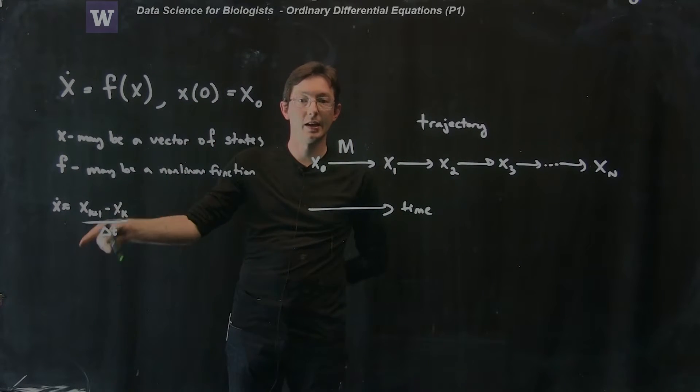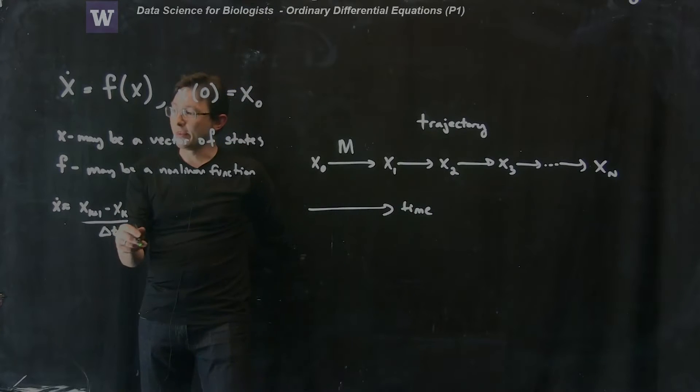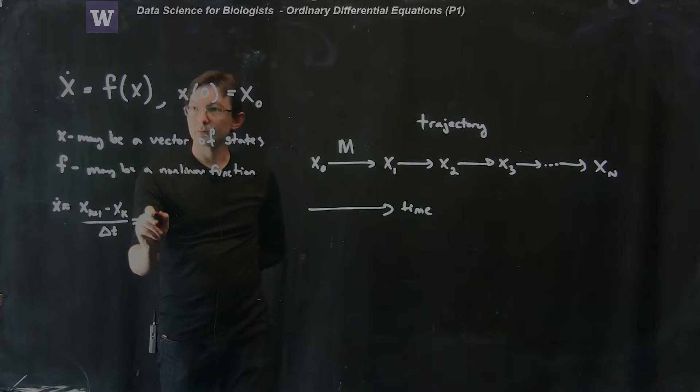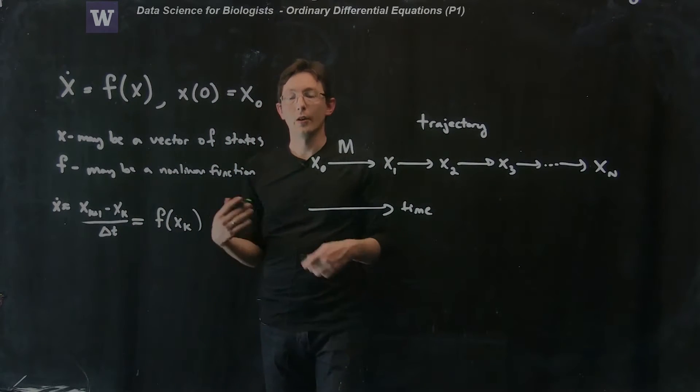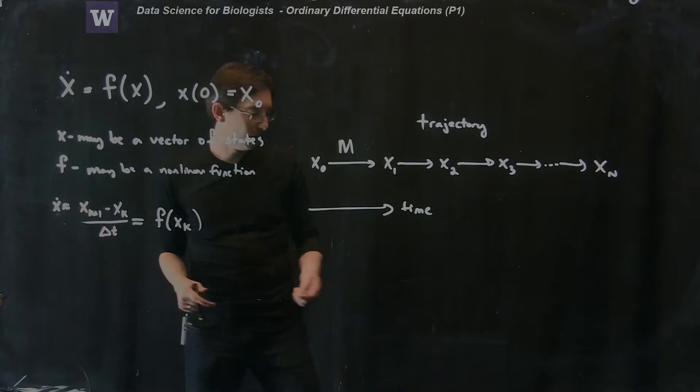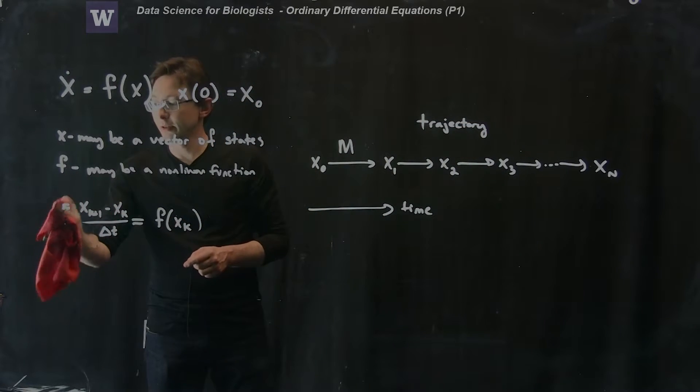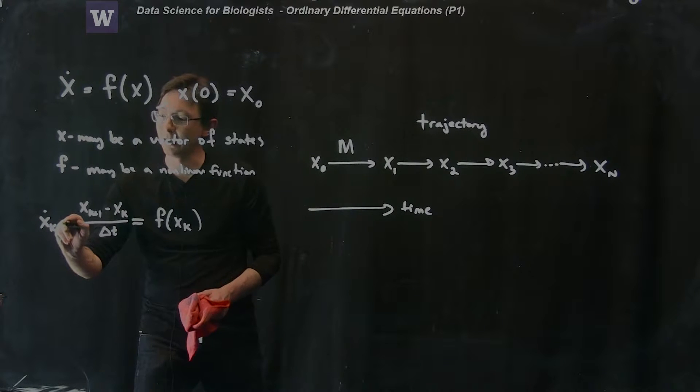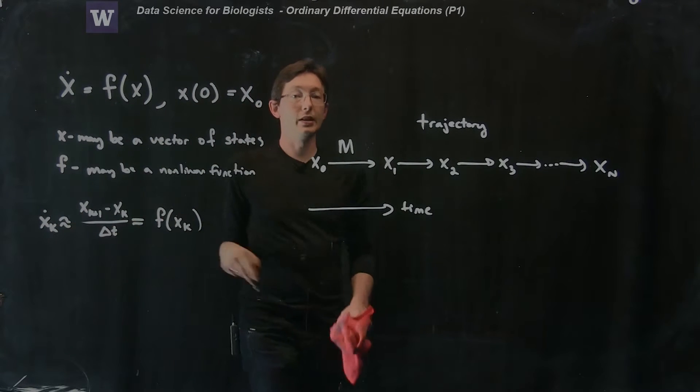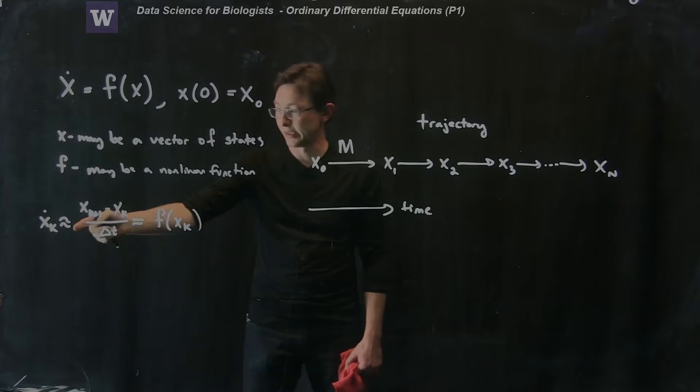Just x_k plus 1 minus x_k divided by delta t, and this is going to equal my function at x_k. So my time derivative, my time derivative x dot at time k is approximately equal to this expression.